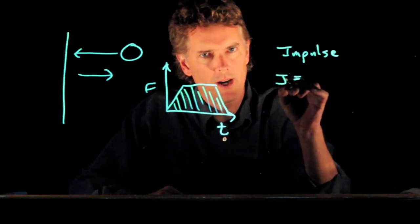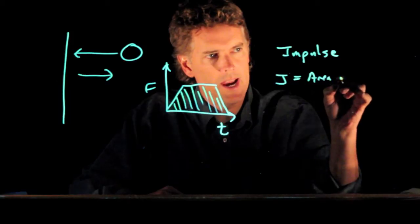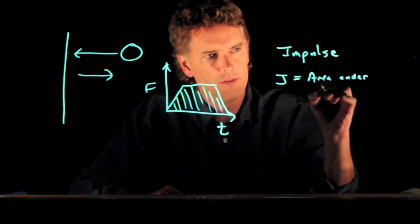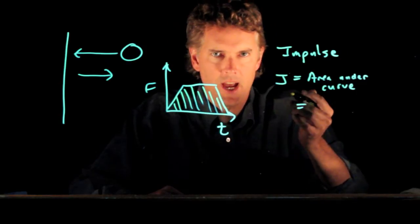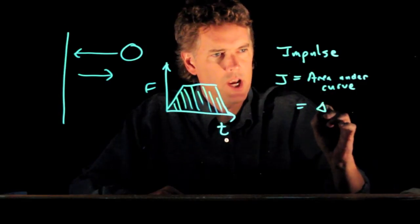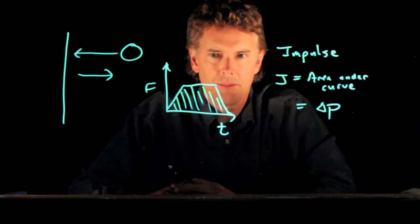Impulse we write with a J. That's equal to the area under the curve. But impulse J is simply change in momentum, delta P.